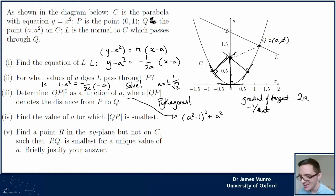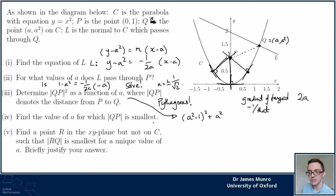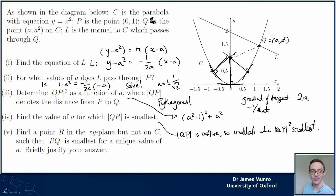Three solutions for part two. Now for part three - no division by zero anymore. QP² = (a² − 1)² + a². Now I want to find the value of a for which this distance QP is smallest. I'll use a trick: since QP is a positive number, it's smallest when QP² is smallest, and the square is easier to work with.